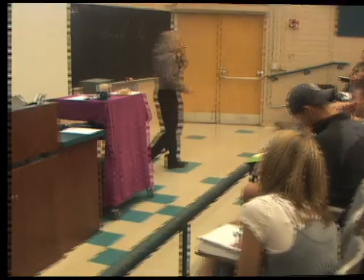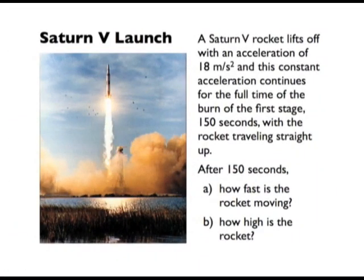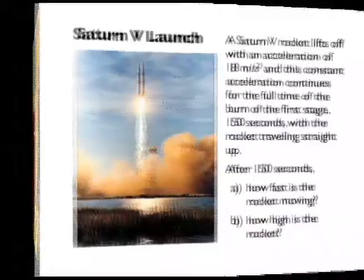So I want to look at a question that has to do with that. Suppose Saturn V rocket lifts off an acceleration of 18 meters per second squared. This constant acceleration continues for the full time of the burn of the first stage. It's 150 seconds with the rocket traveling straight up. And these numbers are approximately right. It continues to accelerate as long as they're firing the engines. Question. At the end of this time, how fast is the rocket moving? And B, how high is the rocket? That's our question.